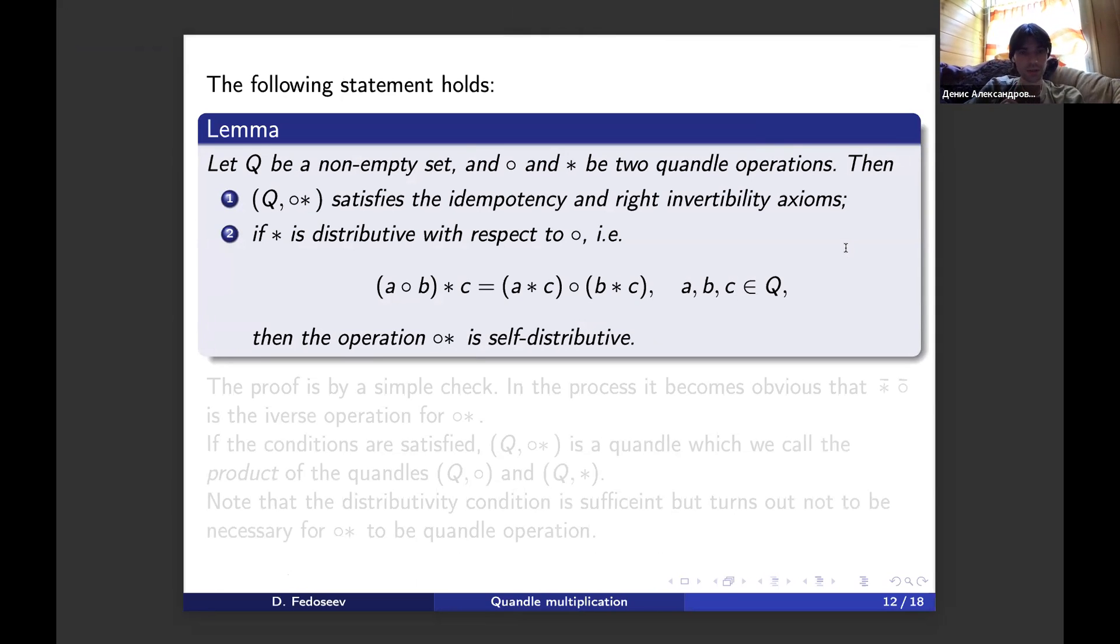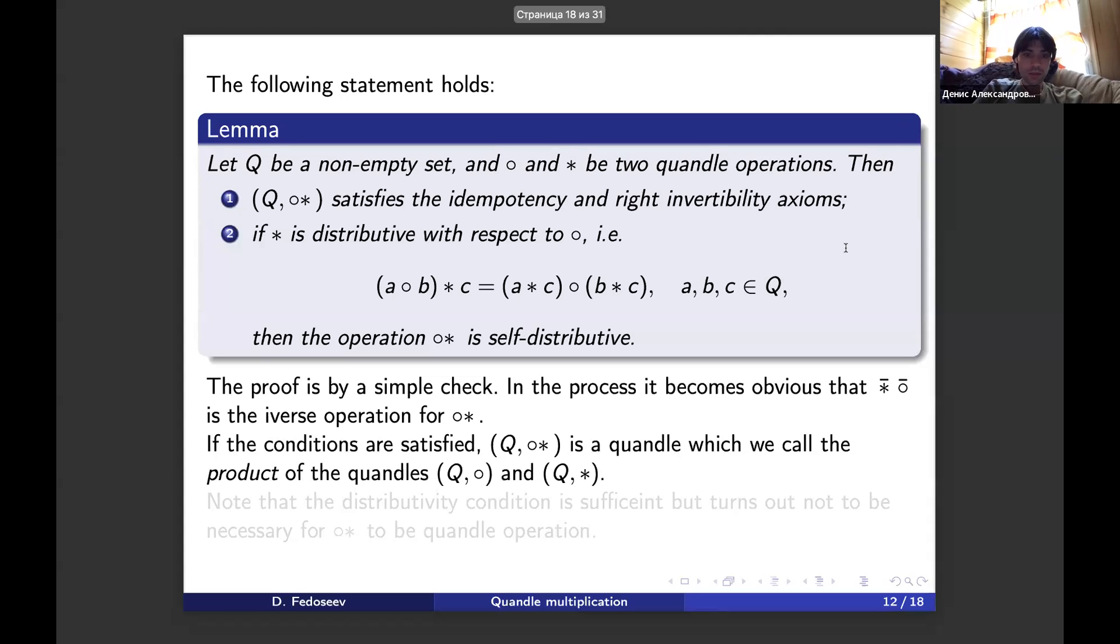If we try to compose the operations in different orders, some are indeed quandels, but if we compose R3 with J3 or vice versa, we have multiplication tables which are not quandel multiplication tables. So the question whether composition is a good operation on quandels is non-trivial. We have the following statement: this operation circle star is always idempotent and right invertible. If in addition we ask star to be distributive with respect to circle, then the operation circle star is self-distributive and so we get a quandel.